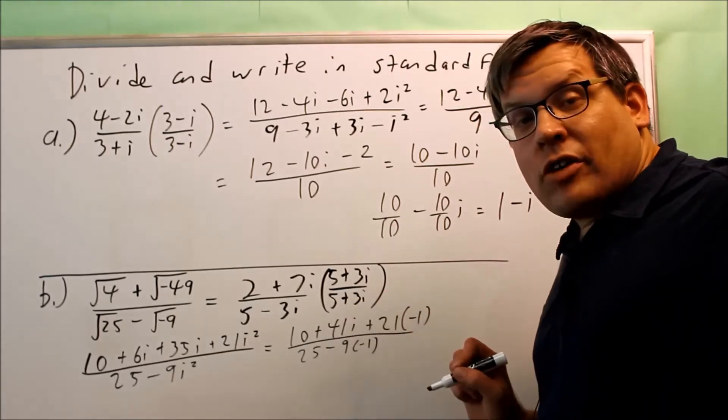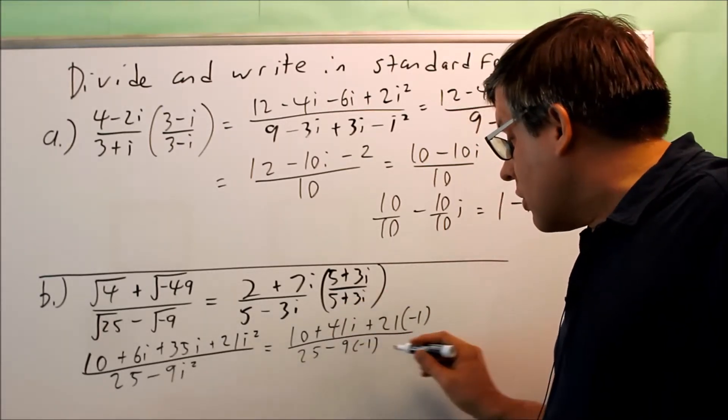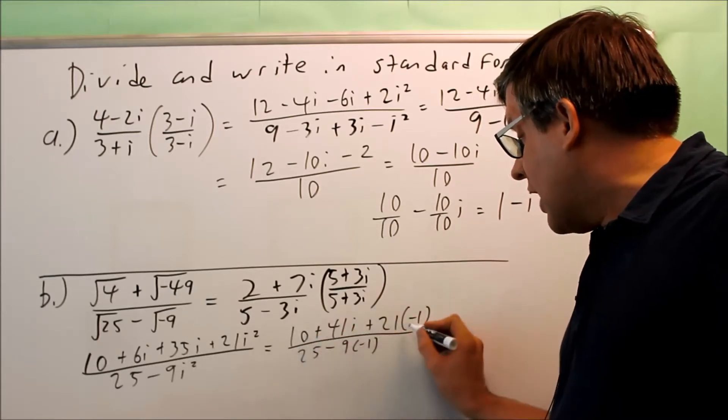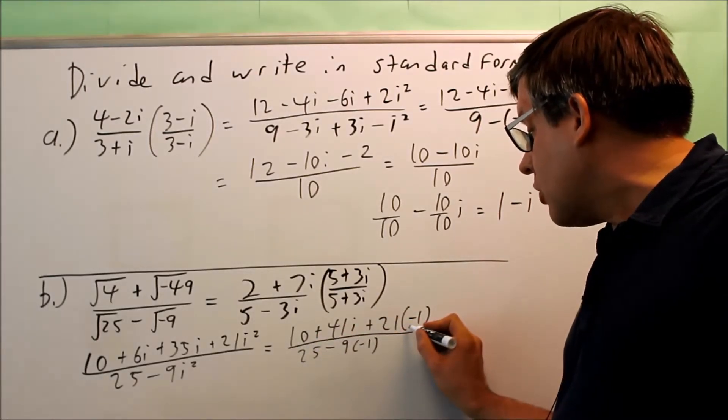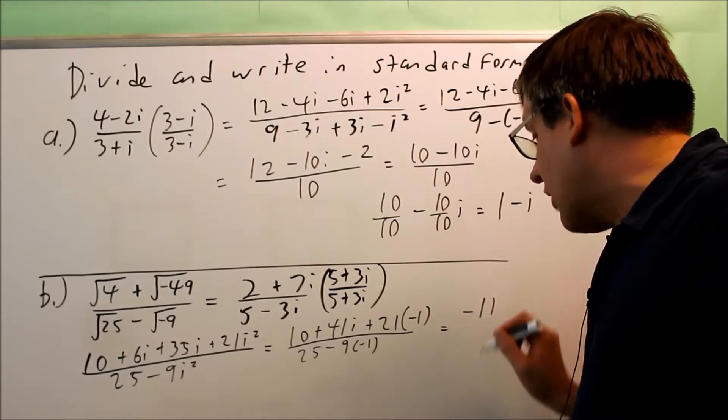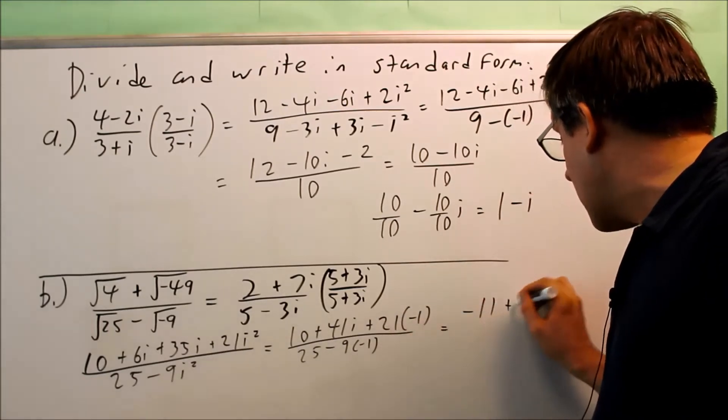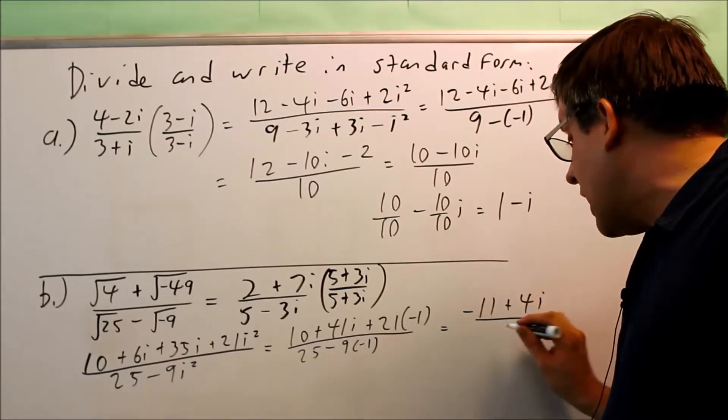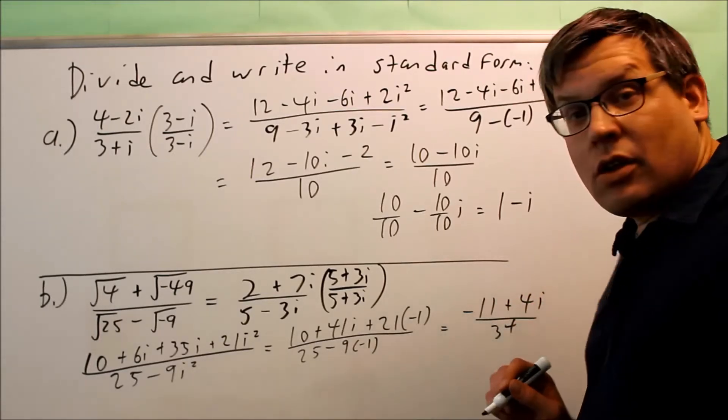Now that we have this, you want to simplify this one further. So for this, you get 10 and this is going to be minus 21. And so for that, that's going to give you negative 11. And then we have plus 41i. Now on the bottom, you're going to get 34. Once again, this,